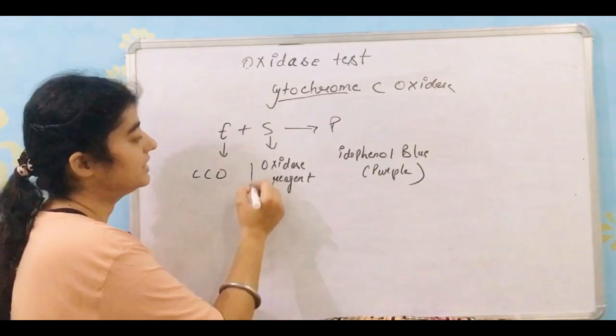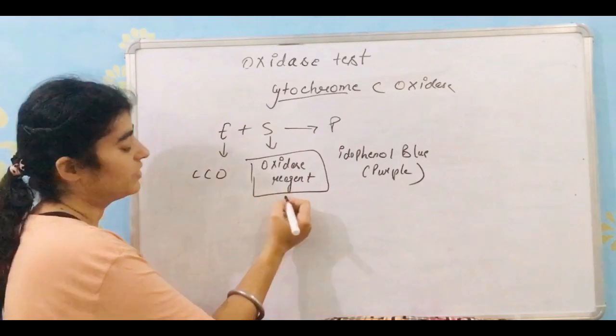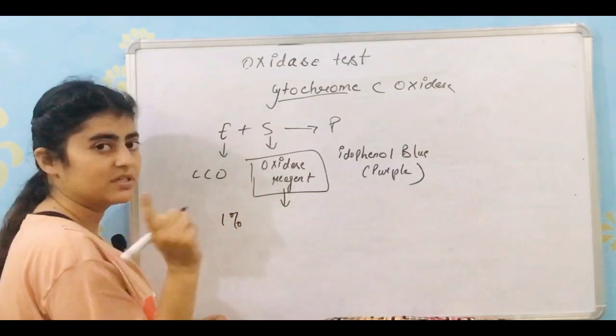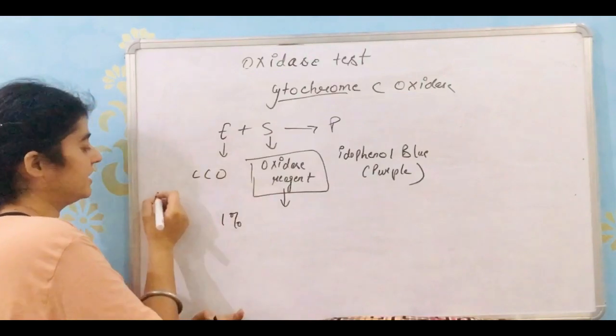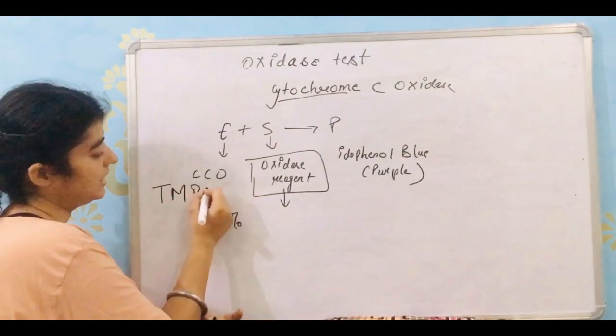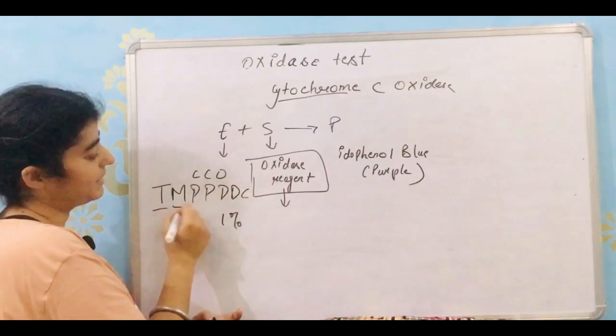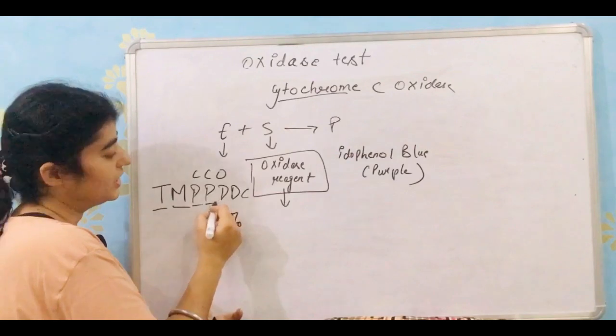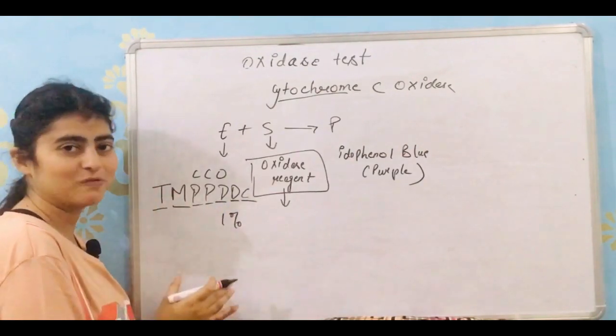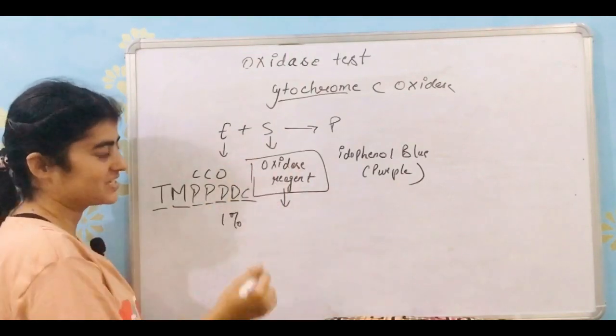Now what is this oxidase reagent? It is 1 percent. First, I will tell you the mnemonic. Here it is TMPPDDDC. I know it is funny, but yes, it is the best way to learn the huge lengthy name of this oxidase reagent.